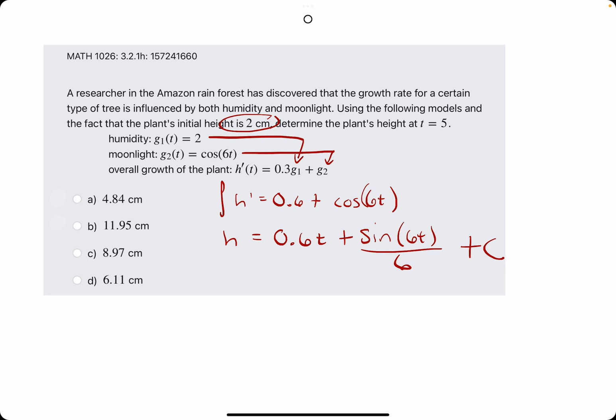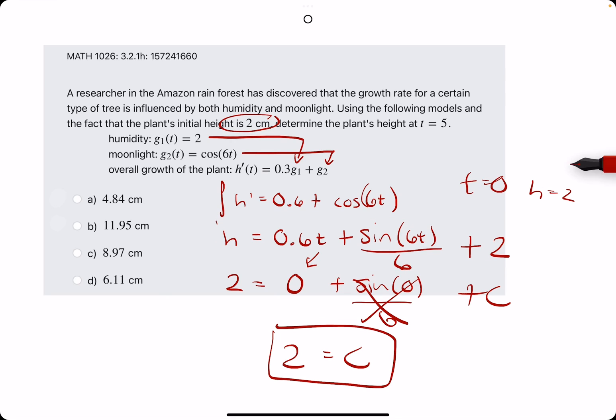Use the initial height of 2, which means when t equals 0, the height is 2. So h equals 2, t equals 0, so this goes to 0. We plug in 0 into the sine, so 6 times 0 is 0 divided by 6 plus C. Sine of 0 is actually also 0, so this whole term goes to 0, and we're just left with 2 equals C. So then we plug the 2 in place of the C, and we have this height equation complete.